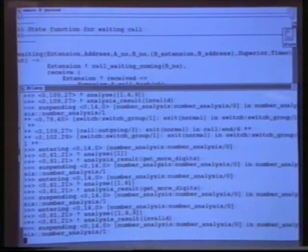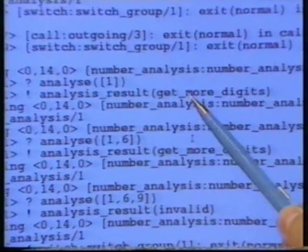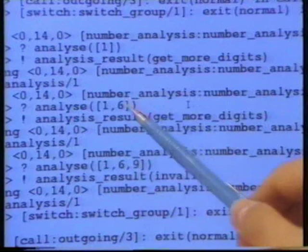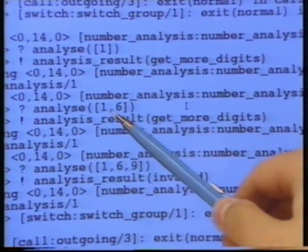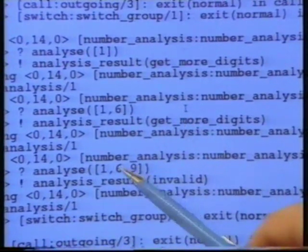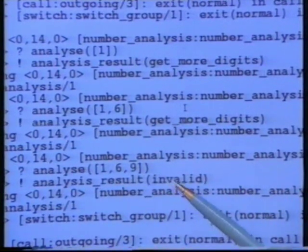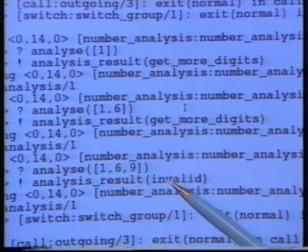I'll now dial an incorrect number — one, six, nine. Here again, we see a symbolic trace of the communications to and from the number analyzer. Again, it got the request to analyze the digit one and returned 'get more digits'. Then it got the request to analyze the digits one, six, and again returned 'get more digits'. Finally, it got the request to analyze the digits one, six, nine, but this time it returned the result 'invalid', as this number is invalid.